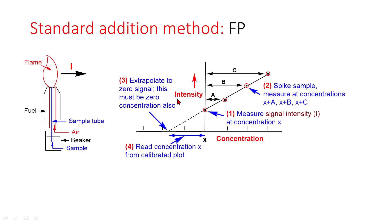In this case, intensity emitted is plotted versus concentration. This is a plot of signal intensity versus concentration of unknown and spiked samples at concentrations X plus A, X plus B, and X plus C.